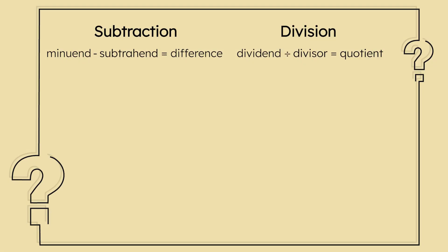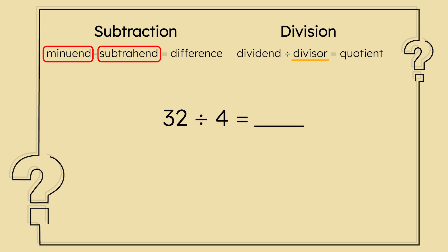With subtraction, we have our starting amount, or minuend, and we subtract from that amount. We can't just flip them — the numbers need to be in that specific order. Similarly with division, we have a starting amount, or dividend — in this case, 32 total weights. Then we have the divisor, or number of groups that amount needs to be split into. These numbers also need to be in a specific order, just like subtraction. This way, we know to divide 32 into four equal groups to figure out our quotient, or answer.